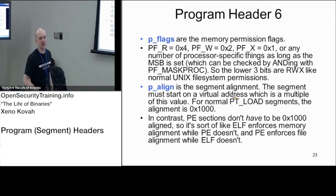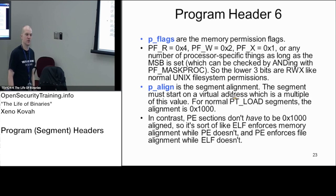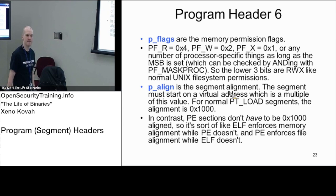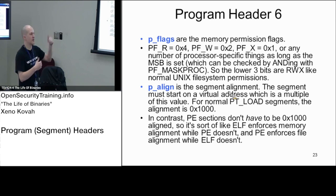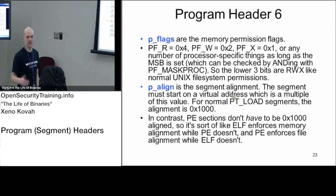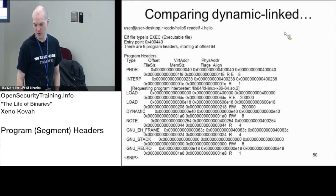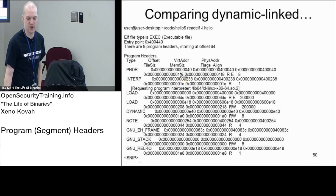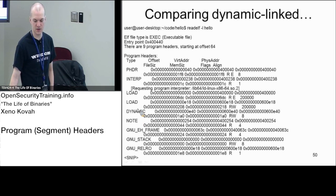p_align is segment alignment related to virtual memory — what boundary should the segment be aligned on. The equivalent back in the PE optional header is section alignment. The optional header's section alignment says map it at hex 1000, and you'll see basically the same thing here — most often hex 1000 — because the OS deals in memory chunks of hex 1000 on Intel.